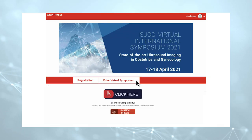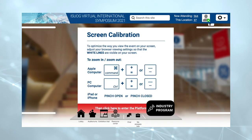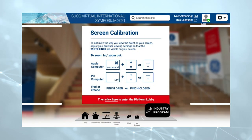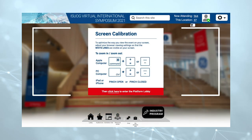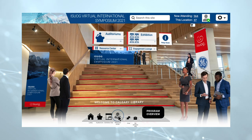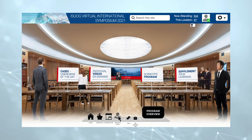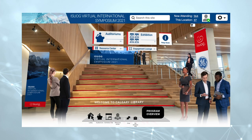When you log in, you will be prompted to adjust your view to ensure you get the best experience. Then click to enter the lobby. From the lobby, you can access all areas of the platform. Click on the lobby icon in the toolbar to return to the lobby.